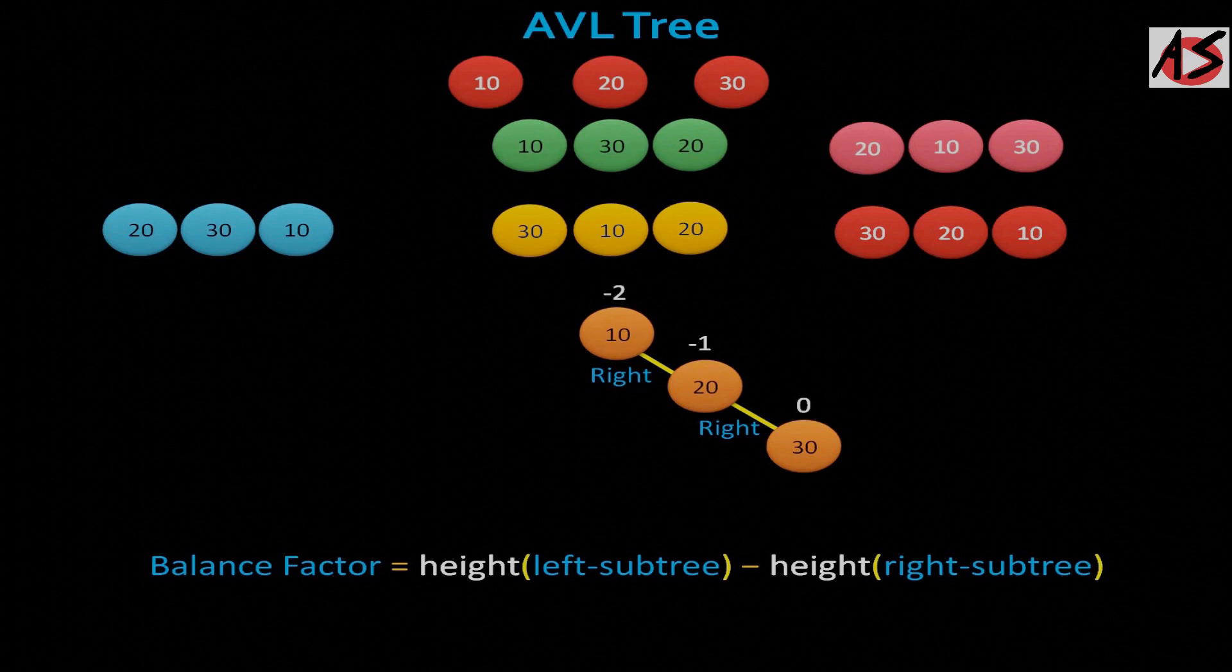Here you can see balance factor of 30 is 0 because left and right subtree heights are 0. Therefore, 0 minus 0 equal to 0. While for 20, left subtree height is 0 and right subtree is 1. So balance factor minus 1.